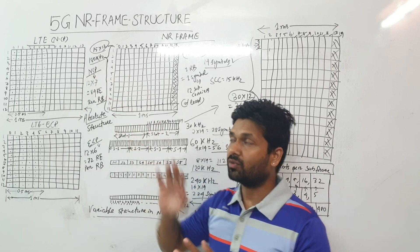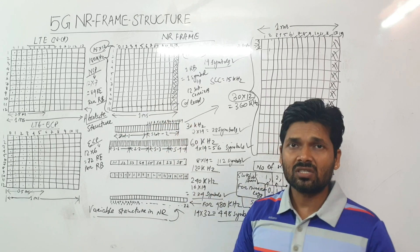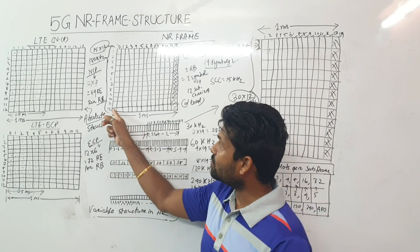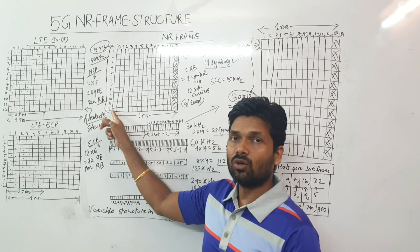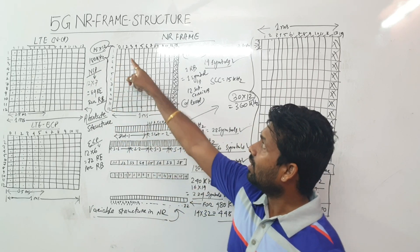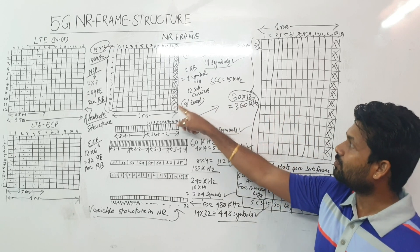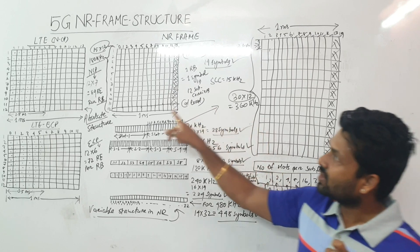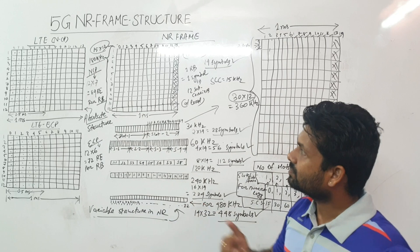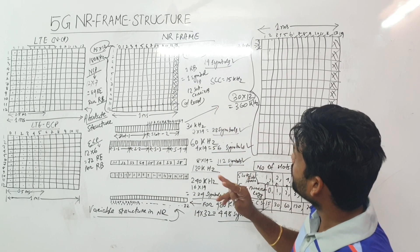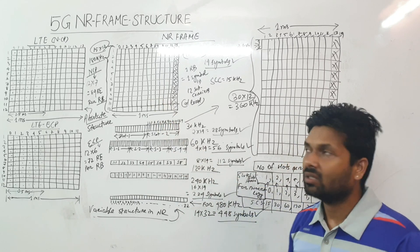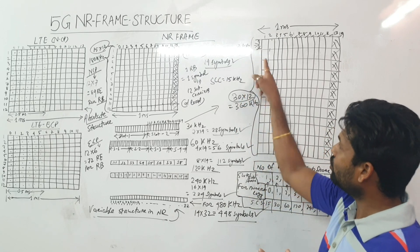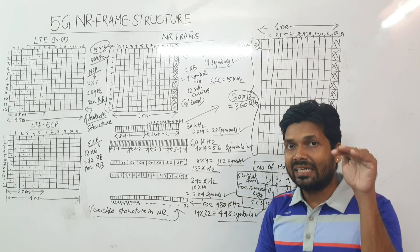For 15 kHz subcarrier spacing in NR, you transmit just 14 symbols in one subframe. For 30 kHz, the subcarrier spacing is doubled, so the bandwidth is also doubled: 15 kHz × 12 subcarriers = 180 kHz, whereas 30 kHz × 12 subcarriers = 360 kHz. The bandwidth increases because of the increased subcarrier spacing.